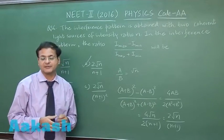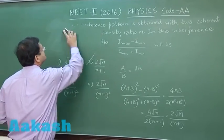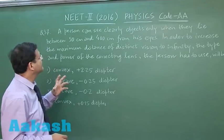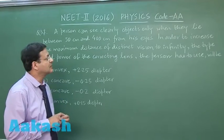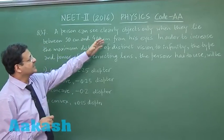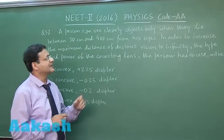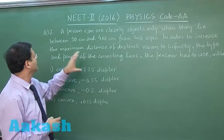Now let us switch over to next question, question 37. This question 37 is based on optics and geometrical correction of human eye. It says that a person can see clearly objects only when they lie between 50 cm and 400 cm from his eyes.